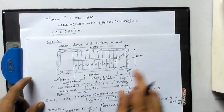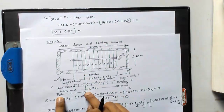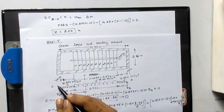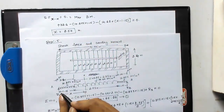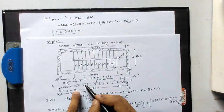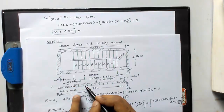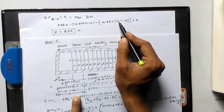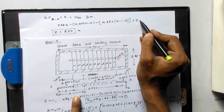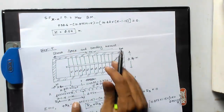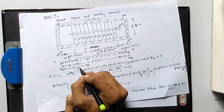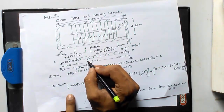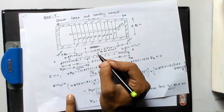Shear force at XX = 0 gives: RA − 10.875 × 1.15 − 14.62 × (x − 1.15) = 0, i.e., 32.6 − 10.875 × 1.15 − 14.62 × (x − 1.15) = 0. Solving this gives x = 2.54 meters. Therefore, at a distance of 2.54 meters from A, the shear force is zero and the bending moment is maximum.